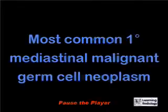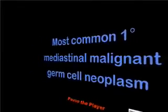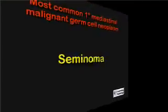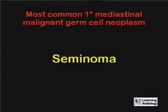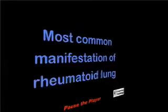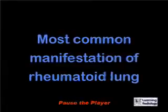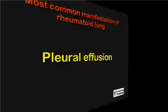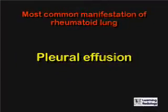What is the most common primary mediastinal malignant germ cell neoplasm? A seminoma. What is the most common manifestation of rheumatoid lung in the thorax? A pleural effusion.